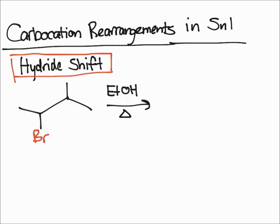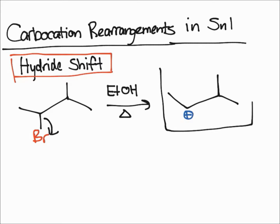We're going to talk about the hydride shift, starting with this molecule here. We're going to do an SN1 reaction by adding EtOH and heat. Remember, you need heat or light to start an SN1 reaction. The first step is the bromine essentially just leaving and taking its electrons with it, which creates a carbocation.